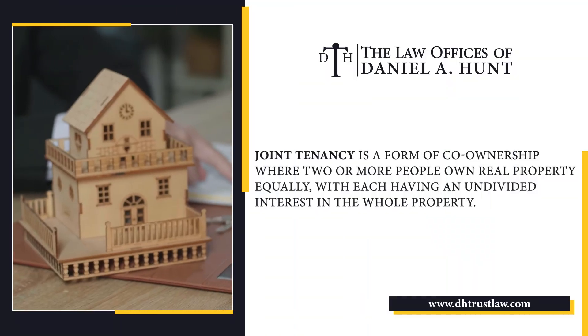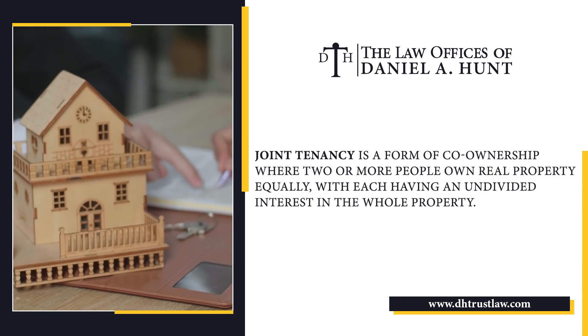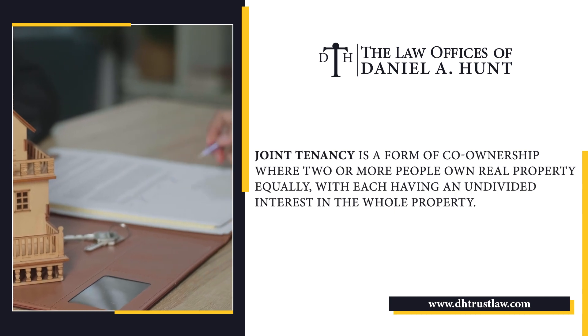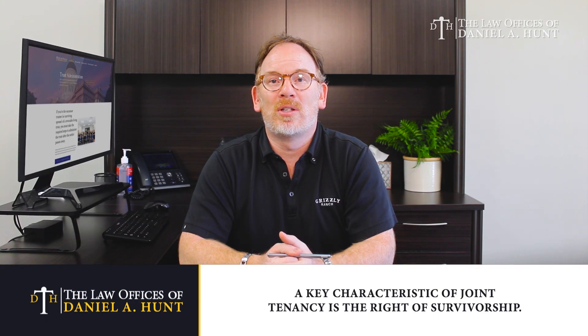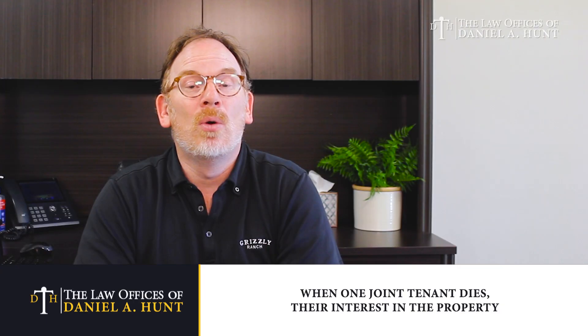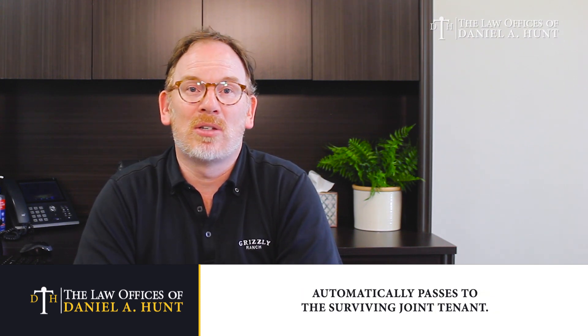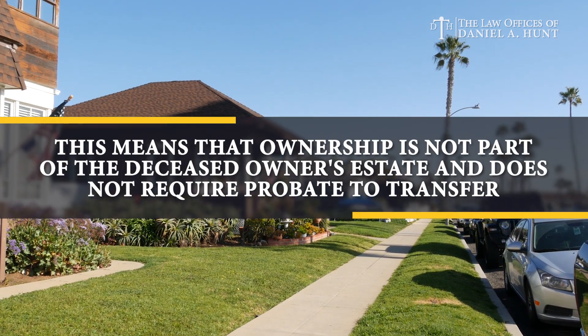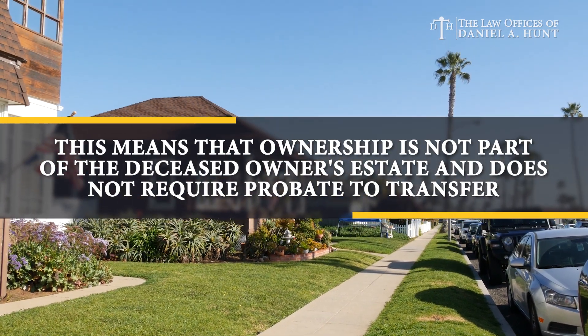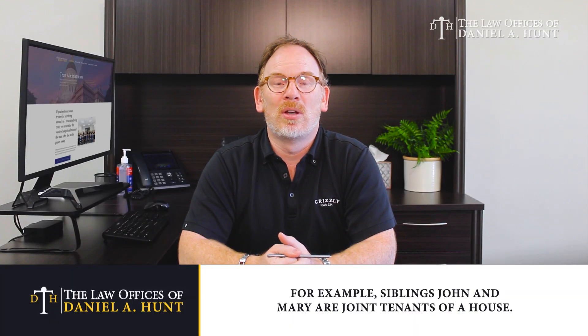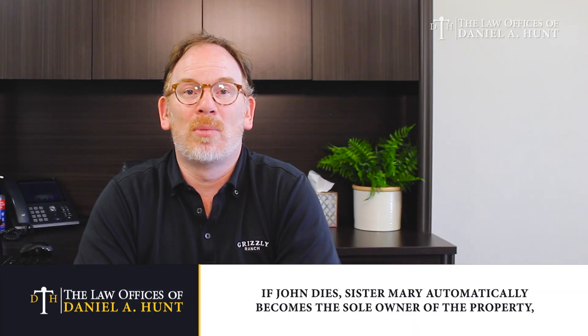Joint tenancy is a form of co-ownership where two or more people own real property equally, with each having an undivided interest in the whole property. A key characteristic of joint tenancy is the right of survivorship. When one joint tenant dies, their interest in the property automatically passes to the surviving joint tenant, meaning ownership is not part of the deceased owner's estate and does not require probate to transfer. For example, siblings John and Mary are joint tenants of a house. If John dies, sister Mary automatically becomes the sole owner of the property, avoiding the need for probate.